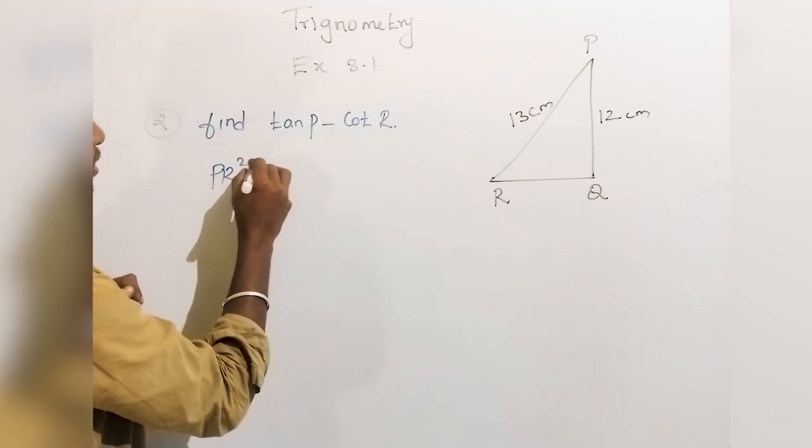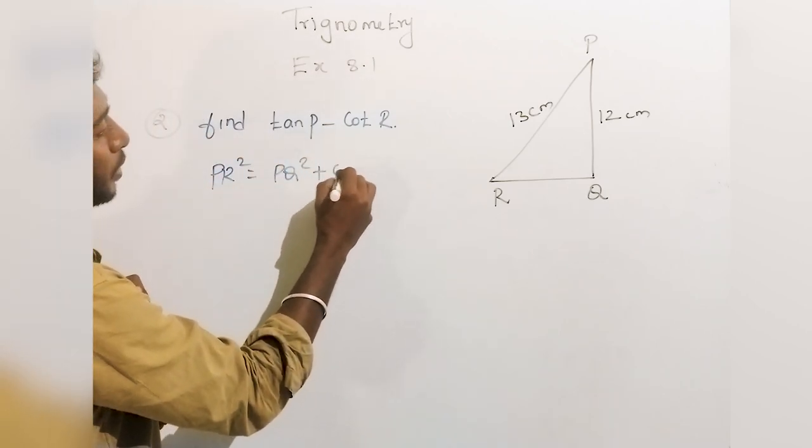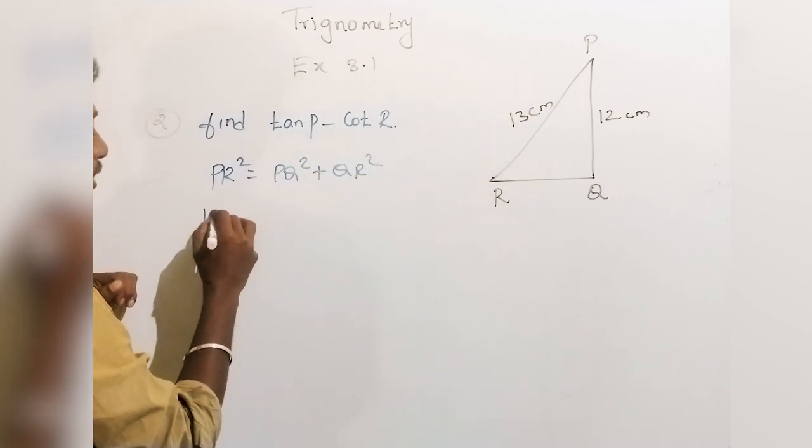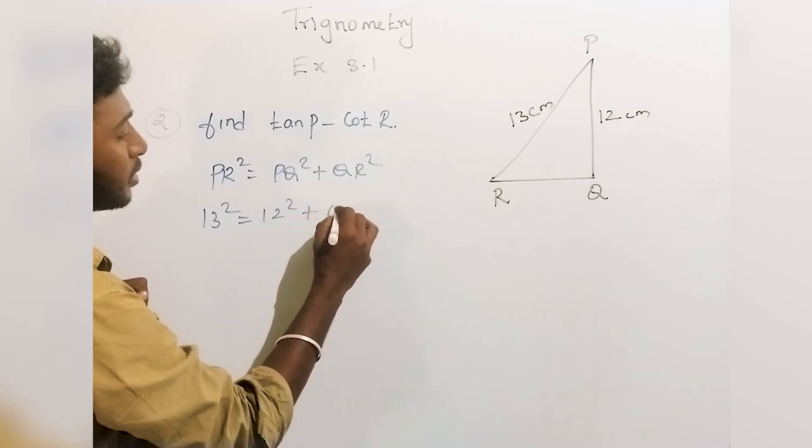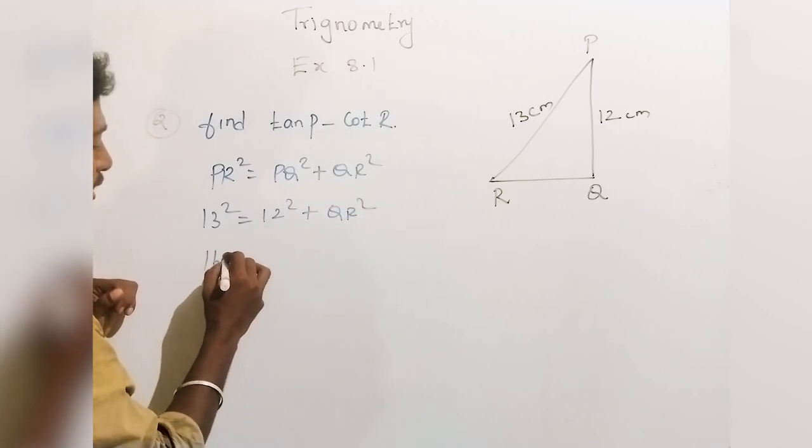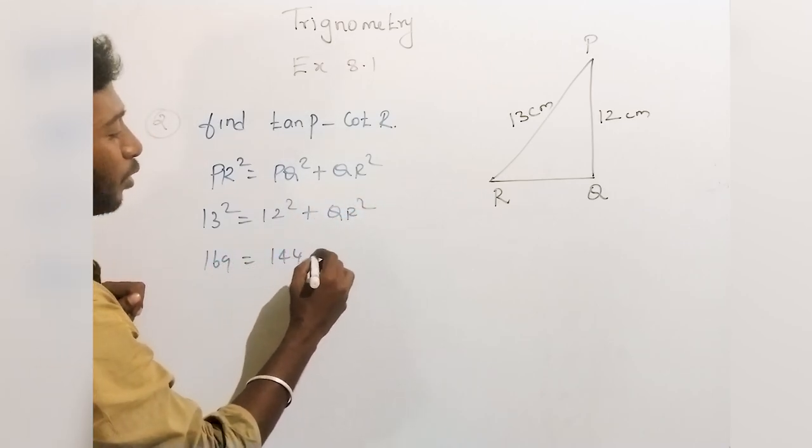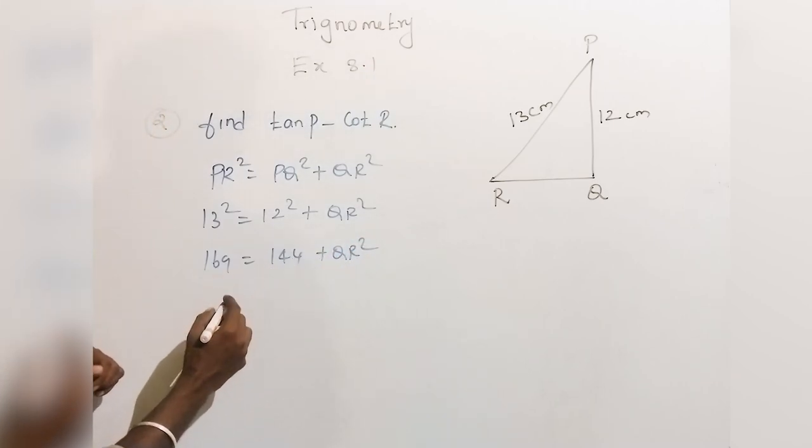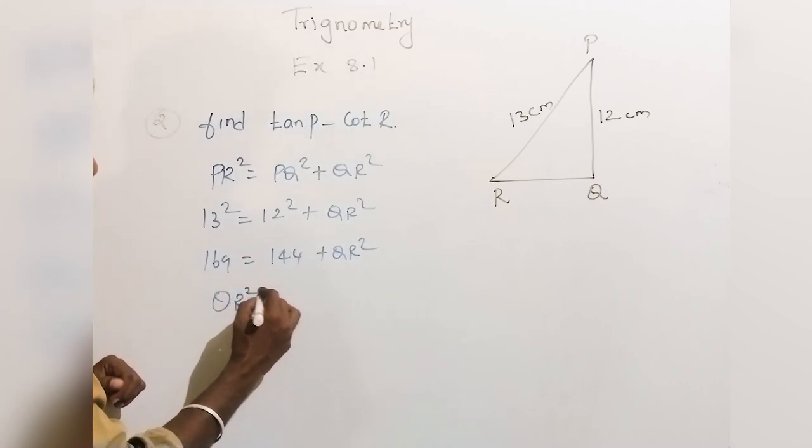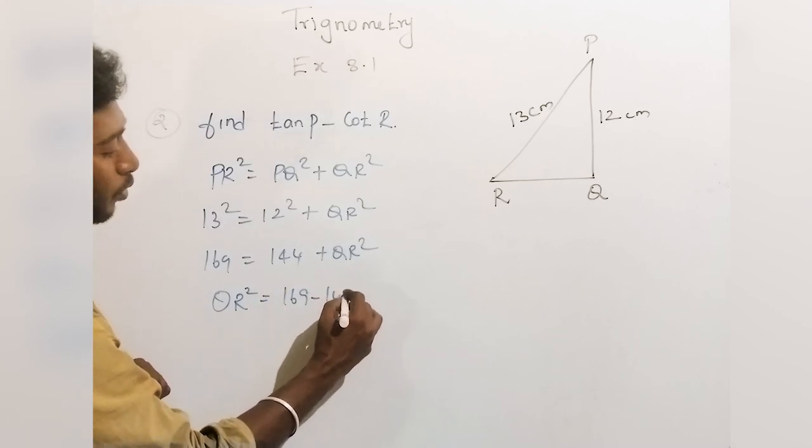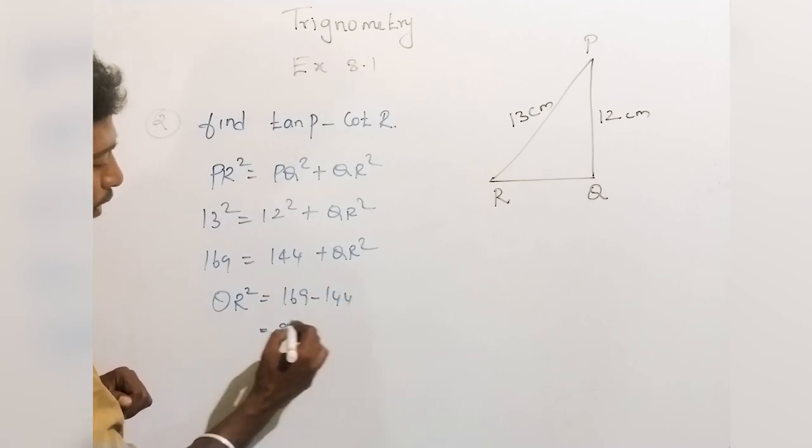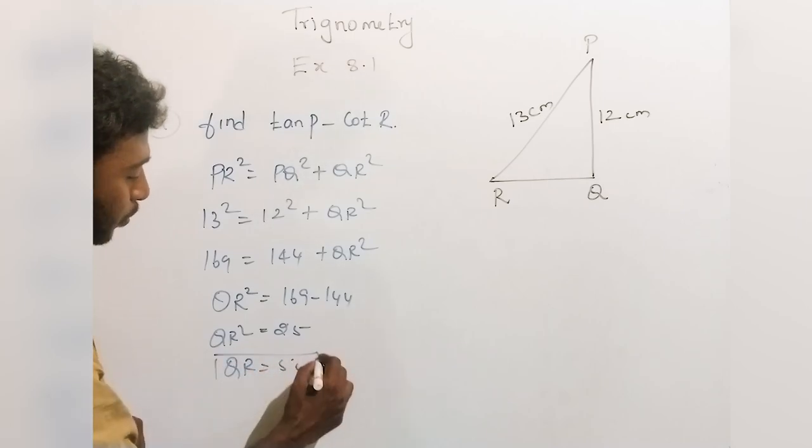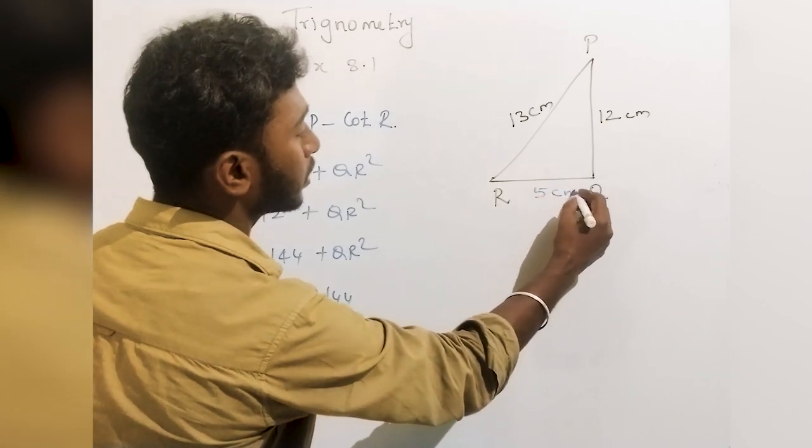PR squared is equal to PQ squared plus QR squared. PR value is 13, so 13 squared equals PQ value 12 squared plus QR squared. 169 equals 144 plus QR squared. QR squared equals 169 minus 144, which becomes 25. QR squared is 25, so QR is 5 cm. So the third side is 5 cm.